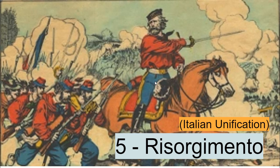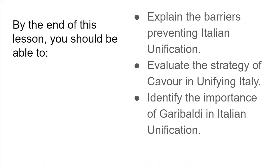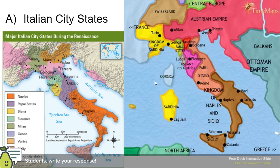The French Revolution really expanded this because people looked at the French nation that the French Revolution had created and saw the amazing power and opportunity that laid out. They looked at their own people and wanted that for themselves. Today we're going to look at the factors and barriers preventing Italian unification, and evaluate the strategies of Camillo di Cavour and Giuseppe Garibaldi in pushing for Italian unification.